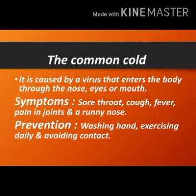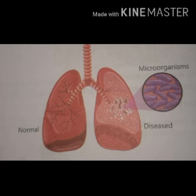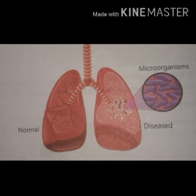Tuberculosis — TB — is a serious disease of the lungs caused by a bacterium, and it can be spread through coughing and sneezing. Symptoms of TB include severe pain in the chest, coughing, weight loss, fever, fatigue, chills, and loss of appetite. Severe means intense; fatigue means tiredness; chills mean coldness due to cold environment; appetite means hunger and thirst.